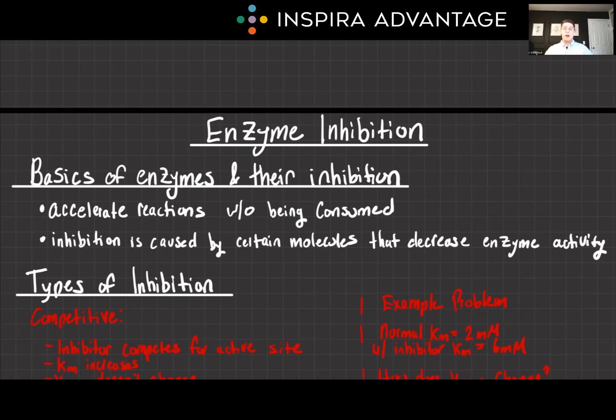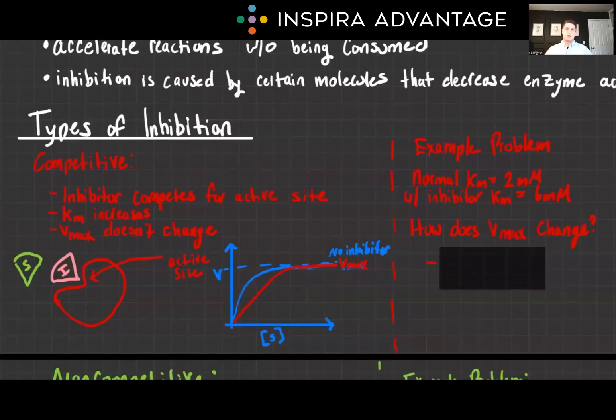If you haven't already watched our video on what KM and VMAX means, go check that out now. Let's start with the easiest type of inhibition to understand: competitive inhibition.